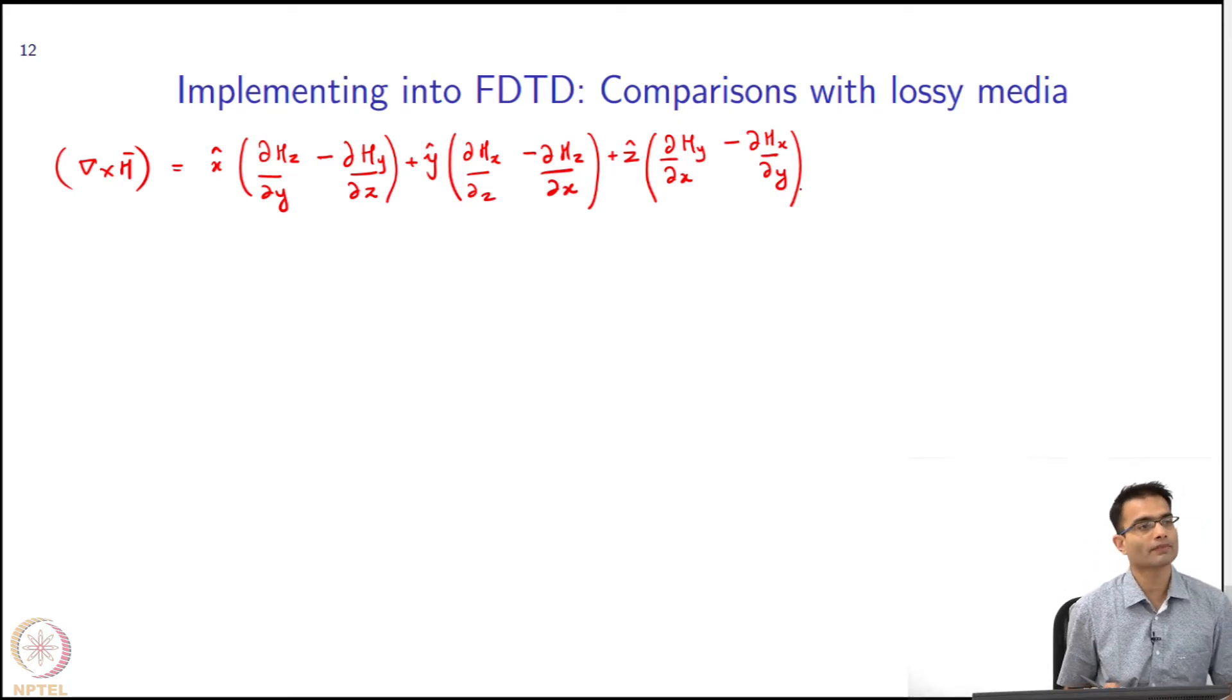Now, if you remember when we had redefined our Maxwell's equations, we had got these coordinate stretching parameters. Were they accompanying the x hat, y hat, z hat, or were they accompanying something else when I redefined del to del_e or del_h? They accompanied the partial derivatives term, not the unit vector terms.